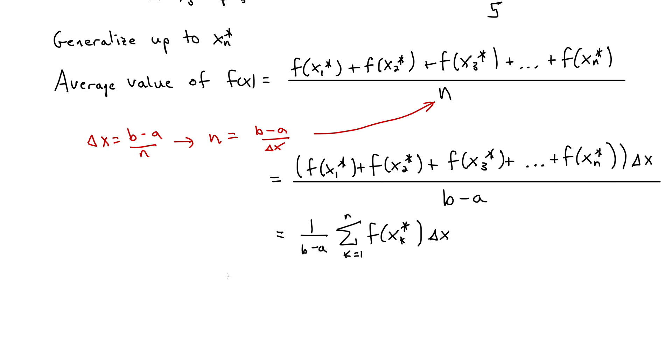So we'll write it as f bar for the average value of the function. Actually, 1 over b minus a can come out to the front of the limit because the limit has nothing to do with that. The limit is only concerned with n going to infinity. I'll write the sum from k equals 1 to n of f of xk star, delta x.